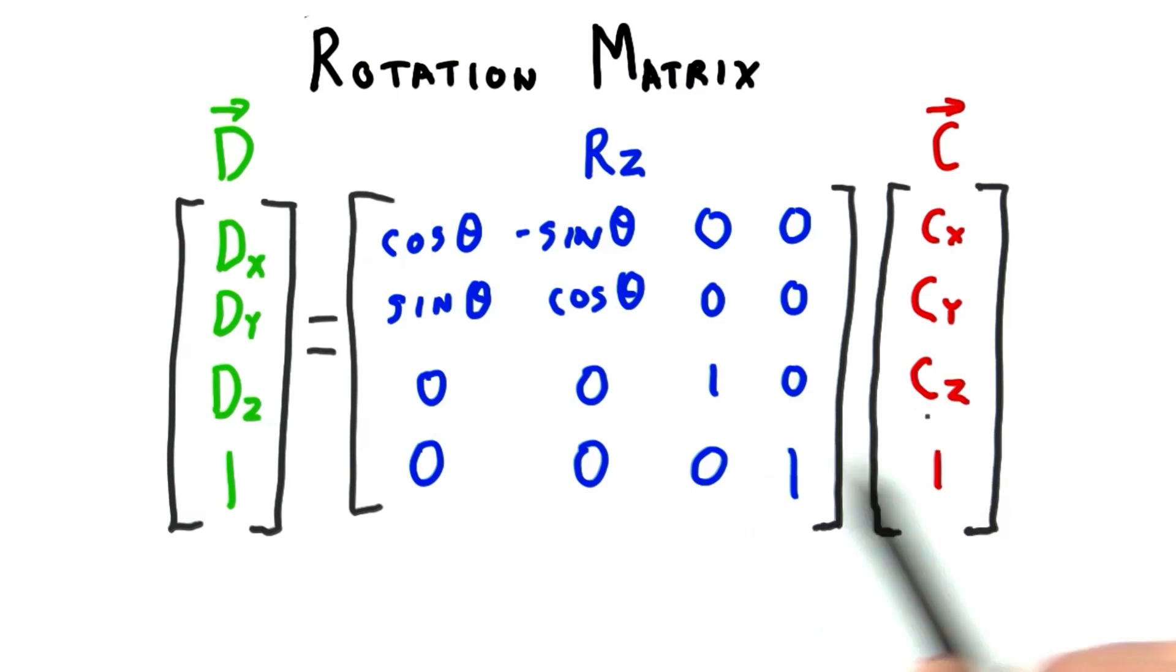this has the effect of leaving the z coordinate untouched. This makes sense since when you rotate around the z axis, the z values shouldn't change.